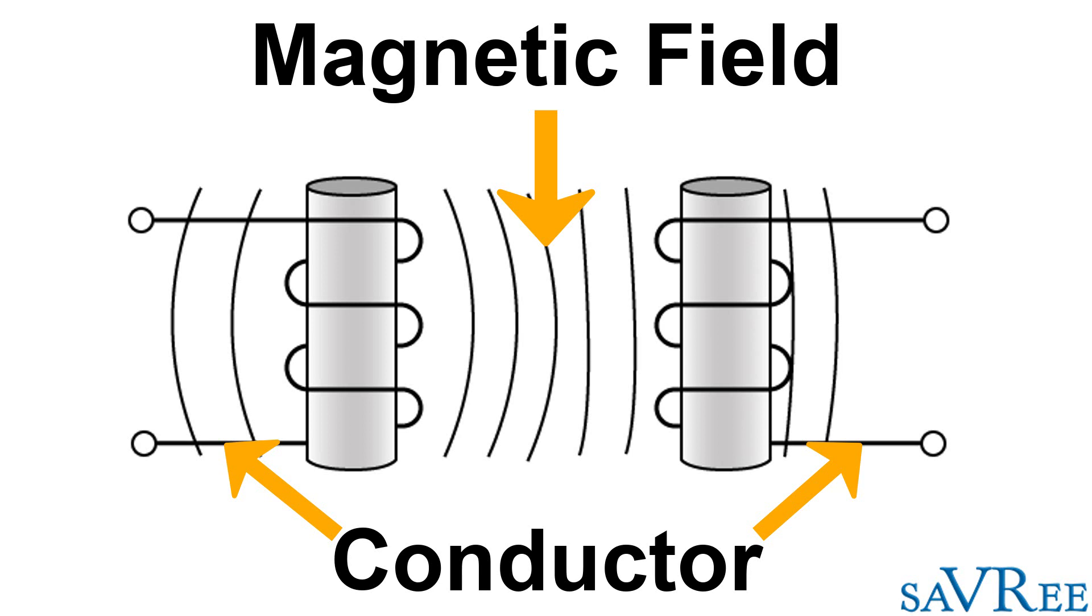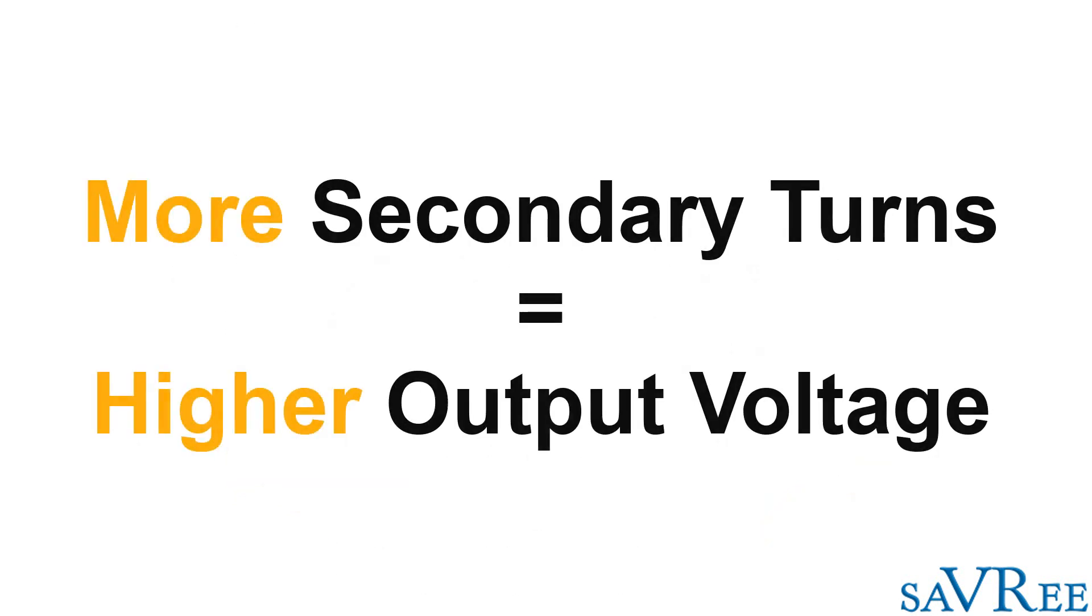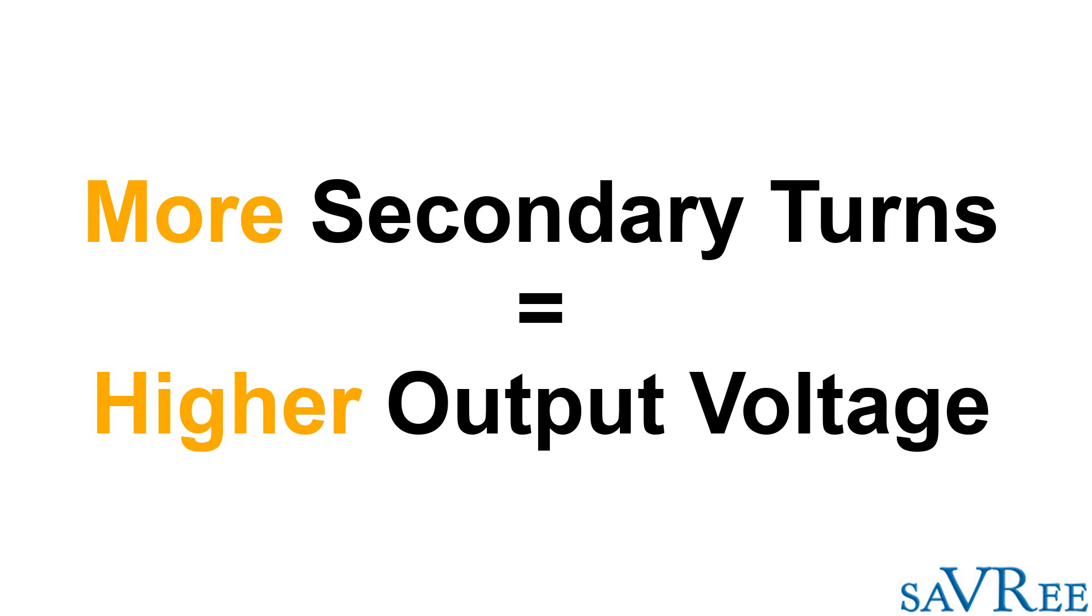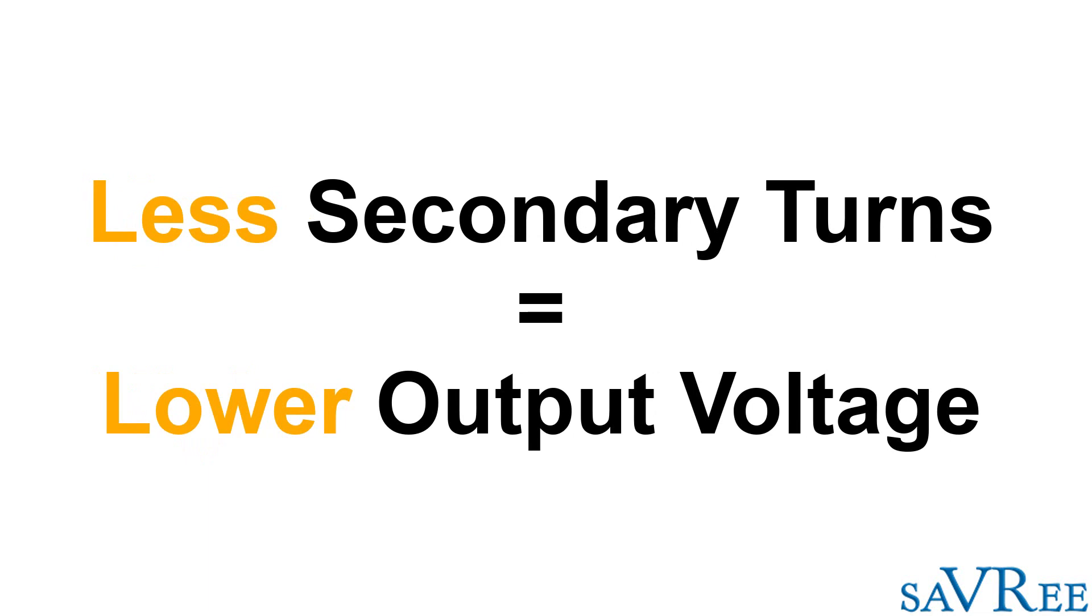By changing the number of turns within the magnetic field, if we can add more turns, then there's going to be more turns within that changing magnetic field, which means we're going to induce more voltage. If we decrease the number of turns within the changing magnetic field, then we will decrease the voltage.